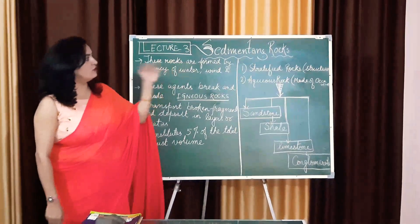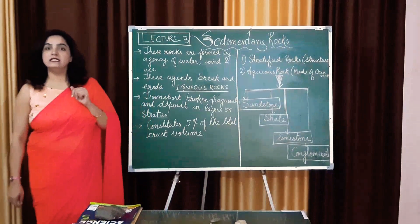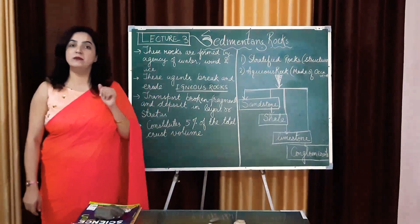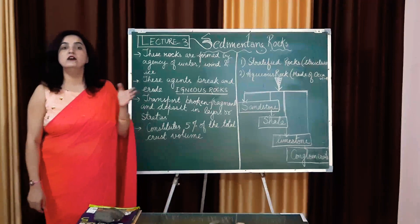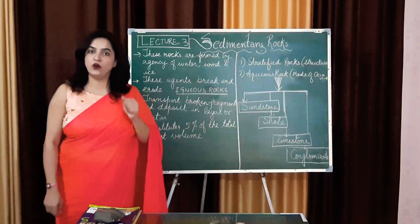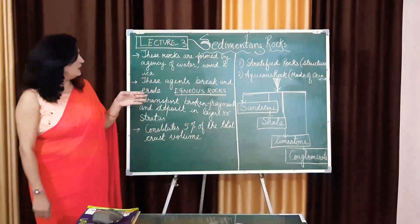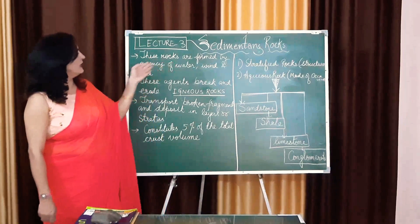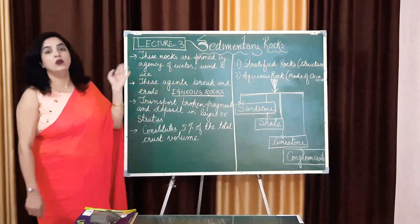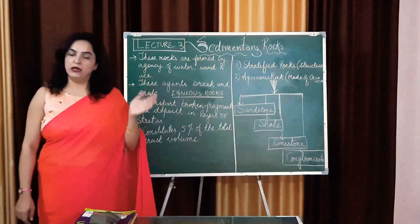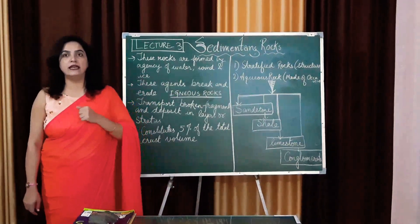Now the second rock is sedimentary rocks. By the word, it suggests the meaning of sediment. What do you mean by the word sediment? Sediments are the parts of the rocks — smaller pieces of rocks. So we can say these rocks are formed by the agency of water, wind, and ice when they erode pieces of rocks.